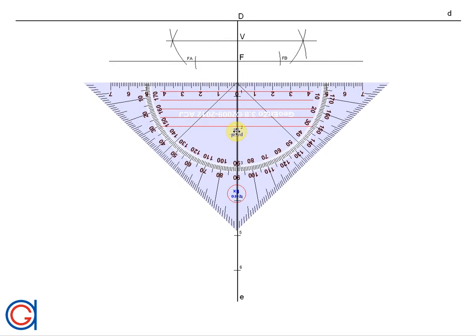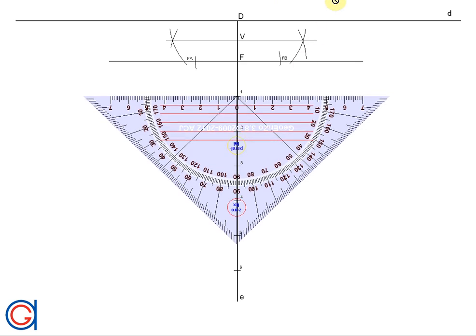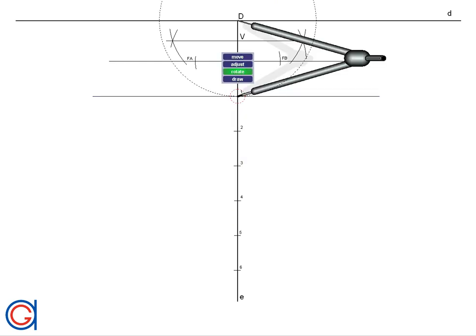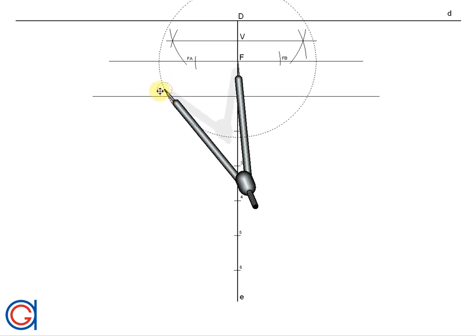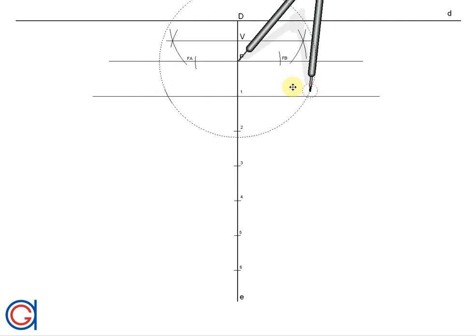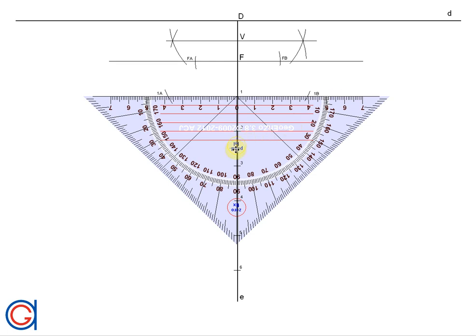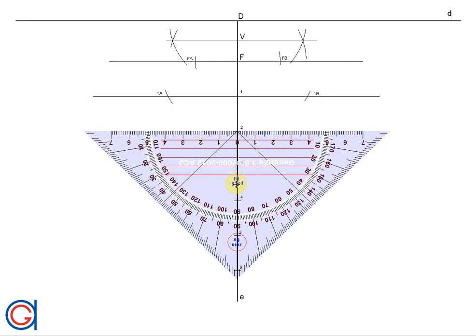So now we are going to continue this process with each of the divisions. So the first thing we draw is a parallel line to the directrix passing through point one, and now setting the compass to the length D1 and centering it on the focus point F, we are going to describe two arcs again to the left and to the right, obtaining two new points on the parabola which we will call 1A and 1B as can be seen here. And we are going to continue this process with the next five divisions, obtaining ten new points which will make drawing the parabola much easier.